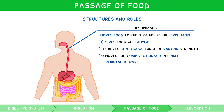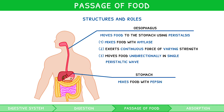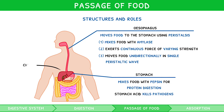The bolus then enters the stomach, where muscular wall contraction churns and mixes food with pepsin, a protease, and so protein digestion begins. Meanwhile, the presence of stomach acid works to kill pathogens. The resulting content is known as chyme.